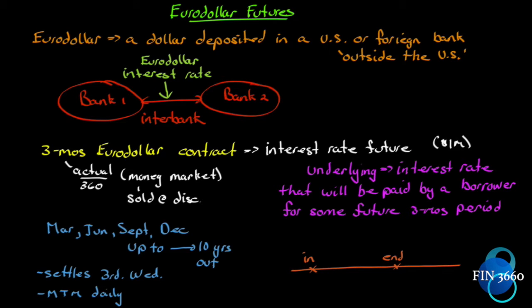We're moving on to the Euro Dollar futures contract, and fair warning: this is tricky. You're going to want to pay attention because there's a twist here. If you're trying to line up the Treasury Bond futures contract with Euro Dollar futures and saying 'I get futures,' well, this one's a little bit trickier. In the Treasury Bond futures contract, we spent time talking about the cheapest to deliver, which implies there is a bond that needs to be delivered. The underlying of the Treasury Bond futures contract is a Treasury bond. We call it an interest rate future because we make a bet on the interest rate by making a bet on the direction of the price of the bond. Remember, rates and prices are inversely related.